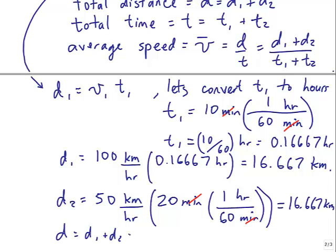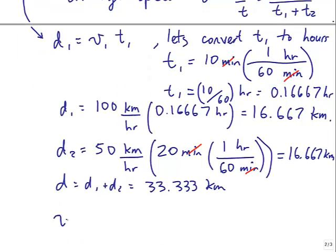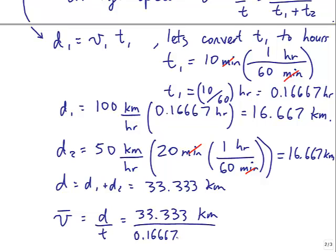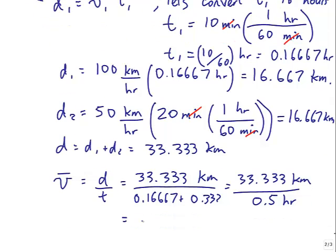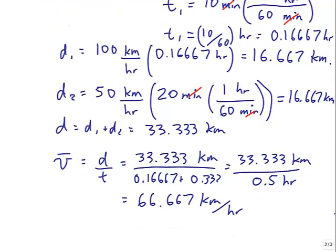So when we add D1 plus D2, you get twice that, which is 33.33 kilometers. And your average speed is D over T. That's that many kilometers divided by half an hour. So 33 divided by 0.5 ends up being 66.667 kilometers per hour.